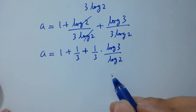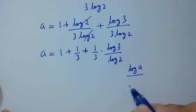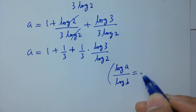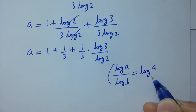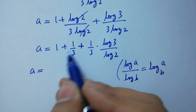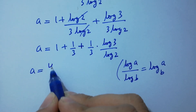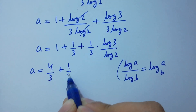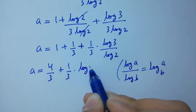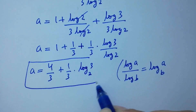Since log A over log B equals log A to the base B, a equals 1 plus 1 over 3, which gives 4 over 3, plus 1 over 3 times log 3 to the base 2. This is the value of a.